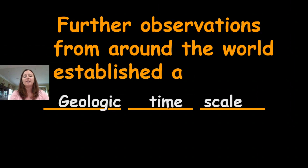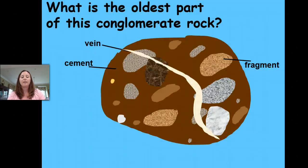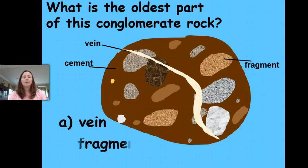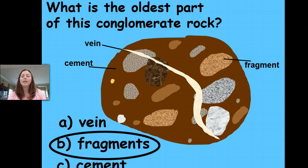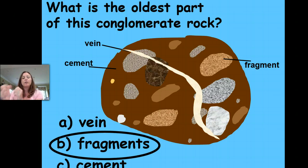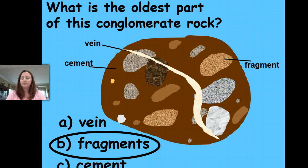Let's take a look at this rock. What's the oldest part of this conglomerate rock — the fragment, the vein, or the cement? It would have to be the fragments, because those fragments were created long before the vein or the cement even occurred. Those rock fragments were once part of a larger rock, got weathered, then got buried and submerged underwater, and would form and get compacted and cemented together with other rocks and minerals. Only after that was the vein formed. So the fragments are the oldest part of this conglomerate rock.